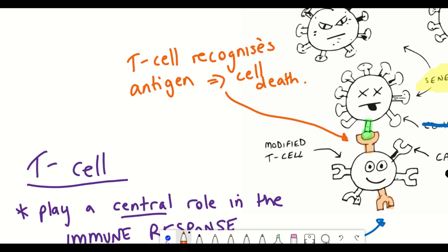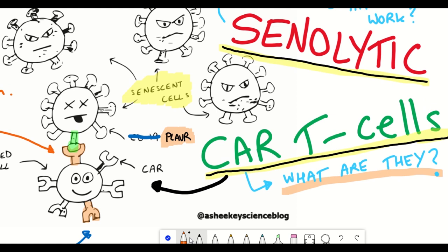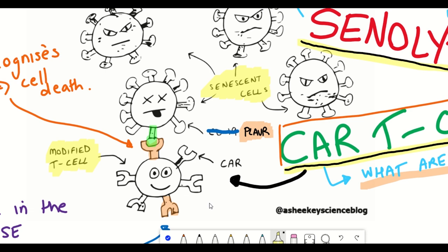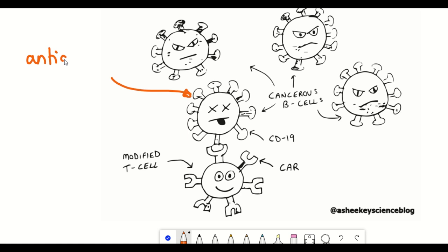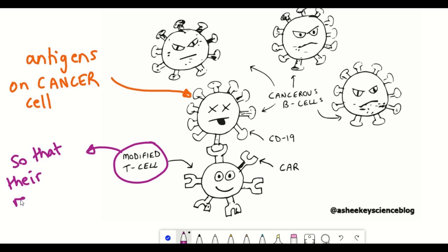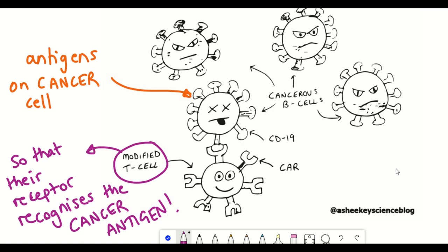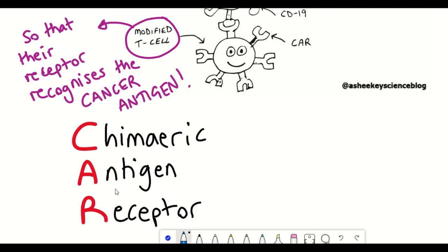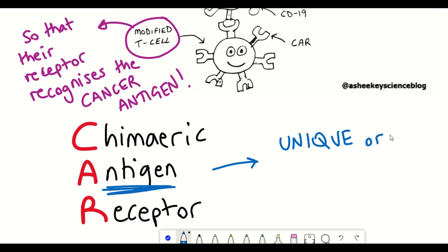A key hallmark of cancer cells is evasion of the T-cell immune response. CAR T-cell therapy provides a way this issue can be overcome. It involves modifying T-cells by genetically engineering them to display cell surface markers that recognise antigens on cancer cells. The cancer cells are then recognised and destroyed — this is where the name CAR comes from: chimeric antigen receptor. An important consideration is identifying antigens unique to cancer cells, to prevent normal healthy cells from being destroyed.